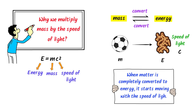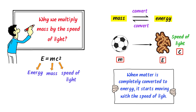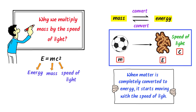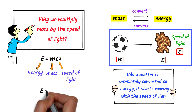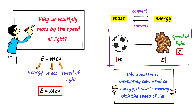Thus there are three variables, or three terms — mass, energy, and speed of light — involved in this whole process. So we write E equals mc squared. It is due to this fact that we multiply m by the speed of light. Remember that when matter is completely converted into energy, it starts moving with the speed of light.